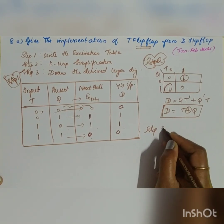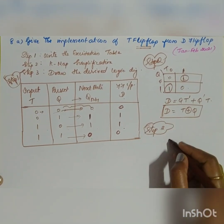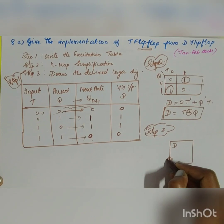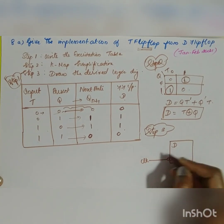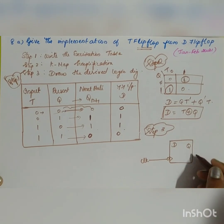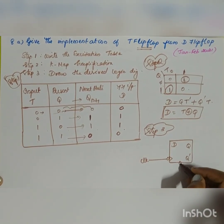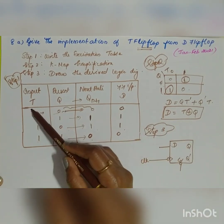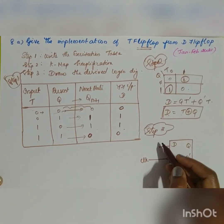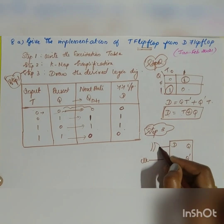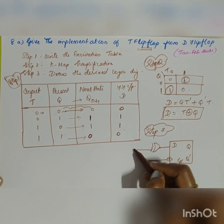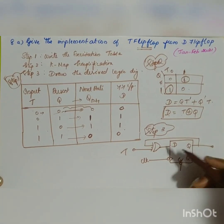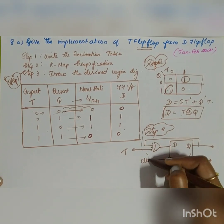Step 3 is drawing the logic diagram. The D flip-flop has inputs D and clock, outputs Q and Q', and a clear signal. The input to D is D = T XOR Q, so an XOR gate is used, with one input being T and the other input being the output Q fed back. This is the complete logic diagram for implementing a T flip-flop using a D flip-flop.